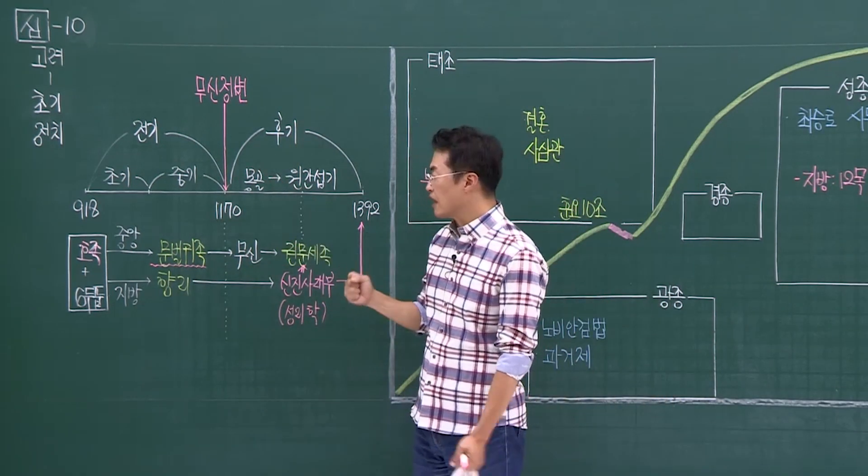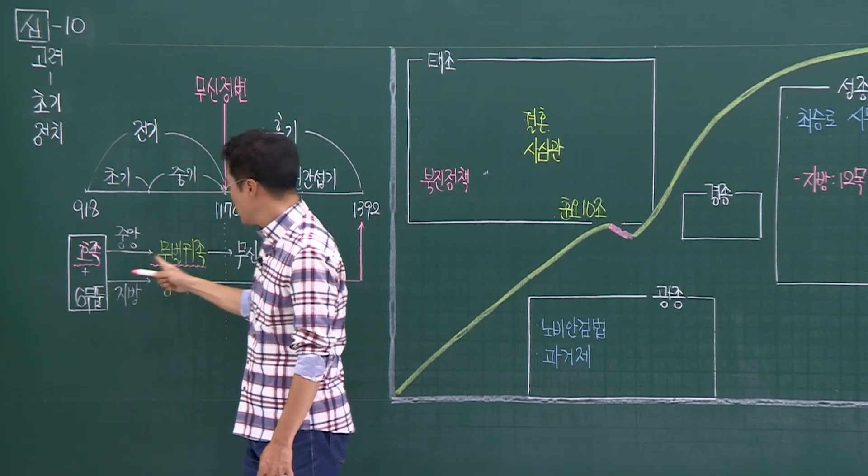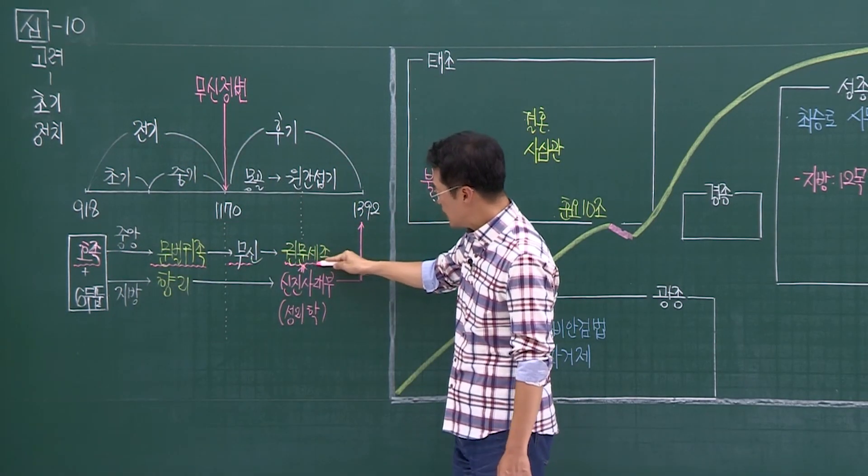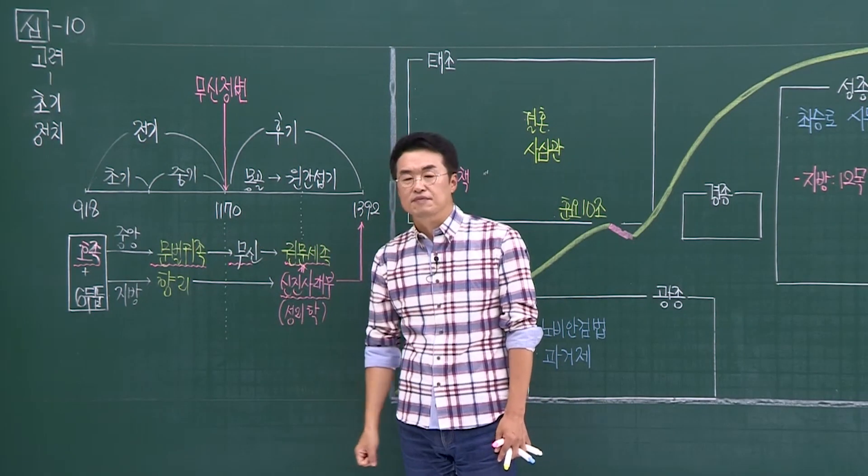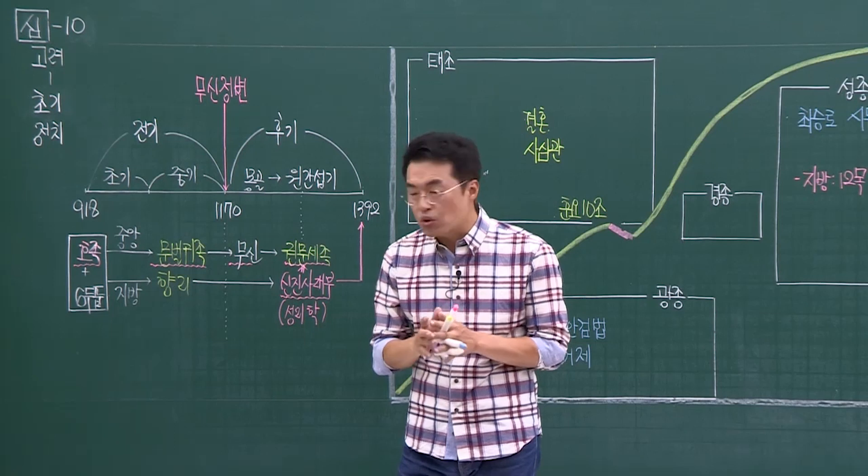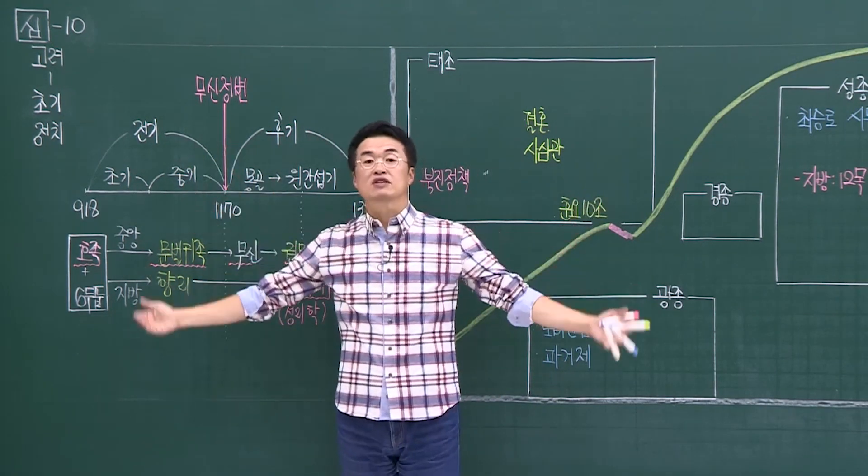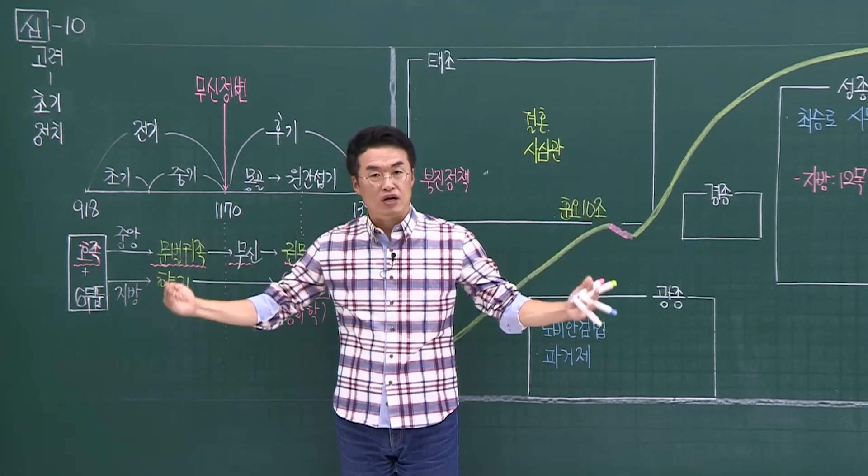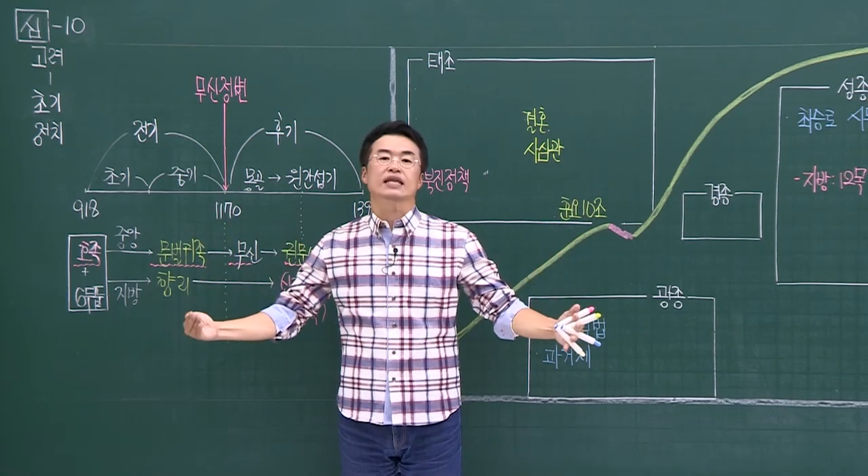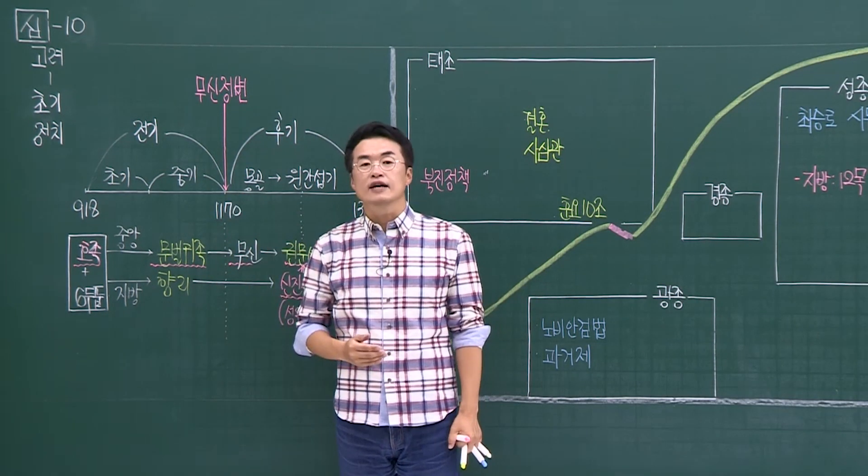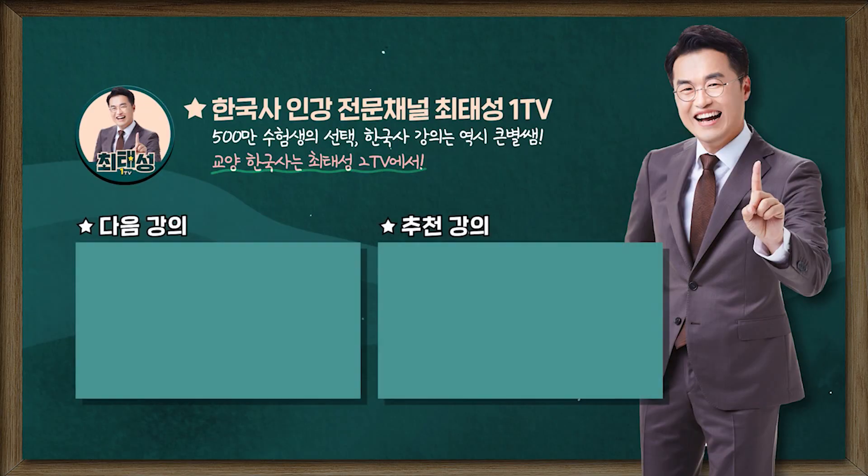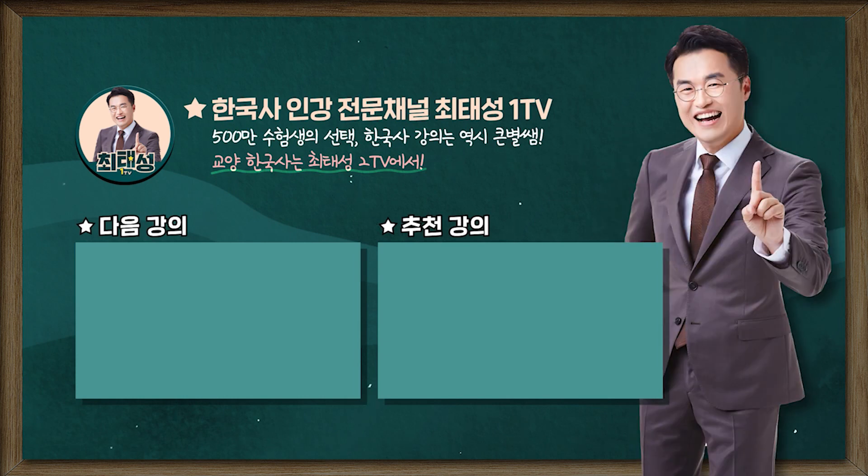자 요게 바로 이제 고려의 시기 구분이에요. 여러분 꼭 기억할 게 뭐냐면 이 시대를 이끌었던 사람들. 호족 문벌귀족 그다음에 무신 그리고 권문세족. 네 그리고 이제 신진사대부 바로 이들에 의해서 이들에 의해서 고려시대가 이렇게 흘러간다라는 거. 역사 주도 세력을 중점으로 놓고 여러분들이 고려사 500년을 한번 큰 숲을 한번 그려보시라는 거예요. 아셨죠. 호족 문벌귀족 무신 권문세족 신진사대부. 네 이 역사 주도 세력에 의해서 움직이고 있는 고려 지금부터 하나씩 찾아가 보도록 하겠습니다. 네 감사합니다.